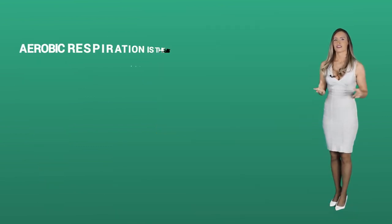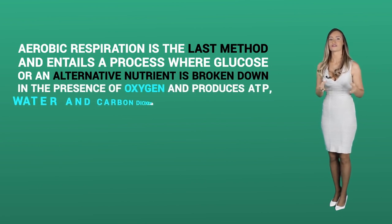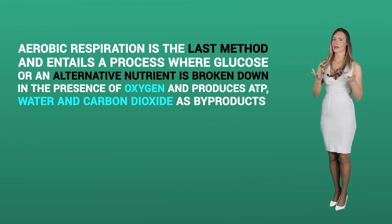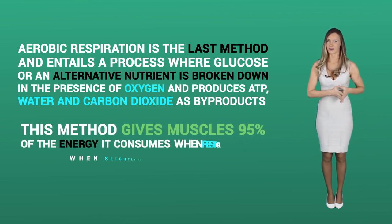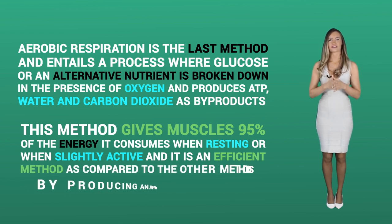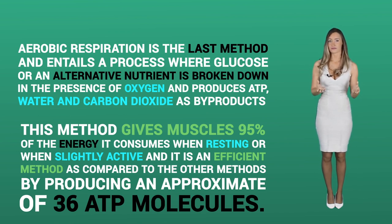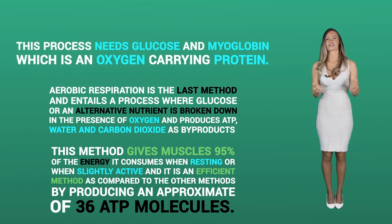Aerobic respiration is the last method and entails a process where glucose, or an alternative nutrient, is broken down in the presence of oxygen and produces ATP, water, and carbon dioxide as byproducts. This method gives muscles 95% of the energy it consumes when resting or when slightly active, and it is an effective method as compared to the other methods by producing approximately 36 ATP molecules. This process needs glucose and myoglobin, which is an oxygen-carrying protein.